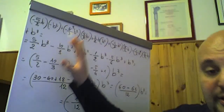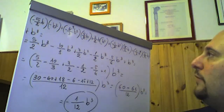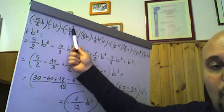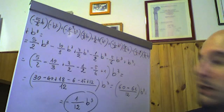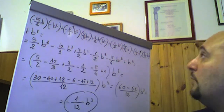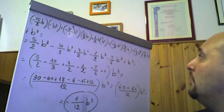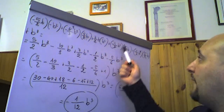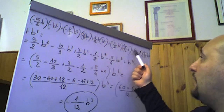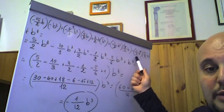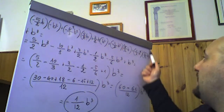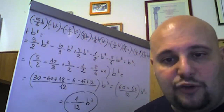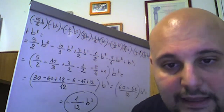Ancora un'espressione: (−5/2 b)(−b²) + (−4/3 b²)(5/2 b) + (3/2 b)(−1/3 b²)(3/2 b) + (−1/2 b²)(5/2 b) + b³. Come al solito, prima i prodotti fra monomi, poi le somme algebriche. Meno × meno = più: 5/2 × 1 = 5/2, b × b² = b³. Poi più × meno × più = meno: 4/3 × 5/2 = 20/6 = 10/3 → −10/3 b³.